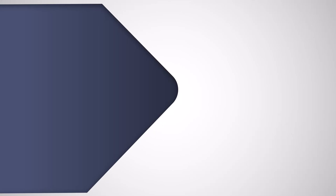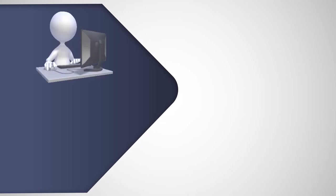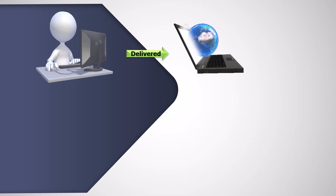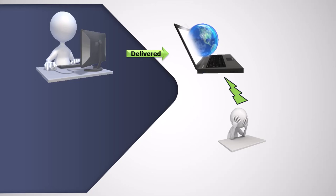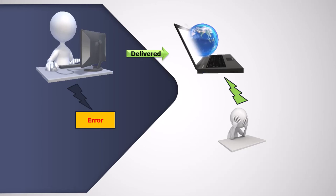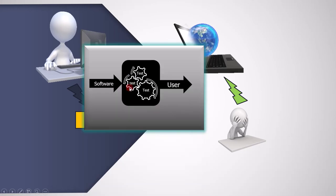Now let's see a real-time scenario to understand this topic. There is a developer who works on a code and creates a software. He then directly hands over that software to the customer. The customer uses it but soon becomes very disappointed — because he has found an error in the software; it's not meeting his expectation. Why did the customer find the error and not us? The answer is that once the software was developed, we handed it over directly to the customer instead of going through the rigorous process of testing. If we had put the product through this process, it is possible that we could have caught the error before it ever reached the customer.